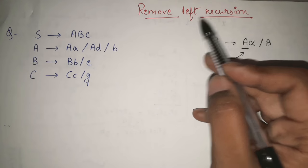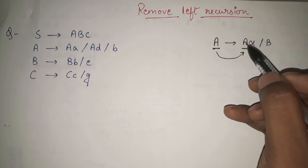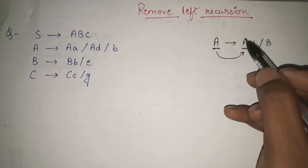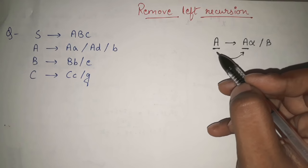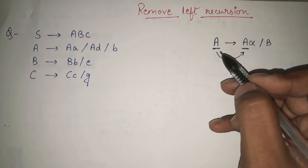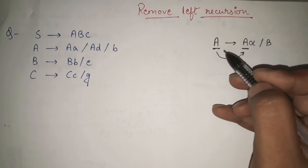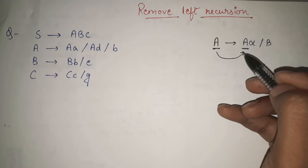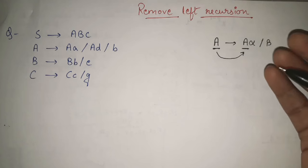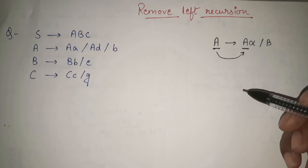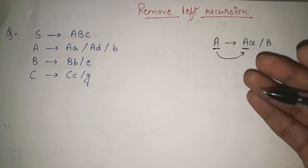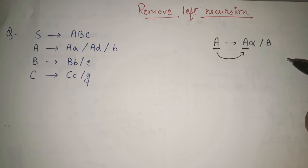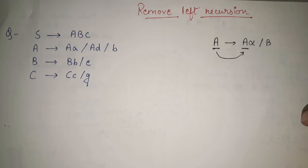It is known as left recursion because, as you can see, it is present on the left-hand side, the most left side in the production. Now, A gives A alpha — if I am having something like that, then A will keep, without doing anything else, simply keep calling A itself. So it will go in an infinite loop, and that's why whenever any such grammar is given in which it is having left recursion, our first task is to remove that left recursion and then move further. We have a definite formula for removing that left recursion.